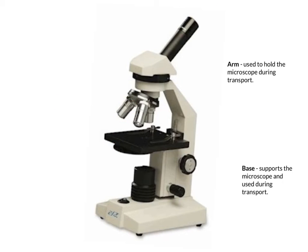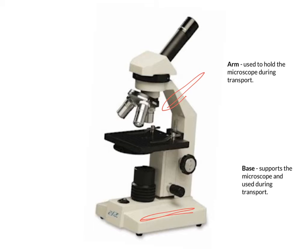Now that we know what a compound light microscope is, let's look at the different parts. First is the arm, which is used to hold the microscope during transport. The second part is the base, used to support and transport the microscope. You will use one hand on the arm and one hand under the base to support it while moving it from one place to the next.